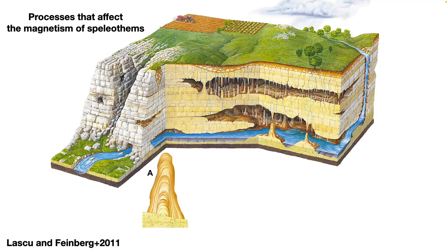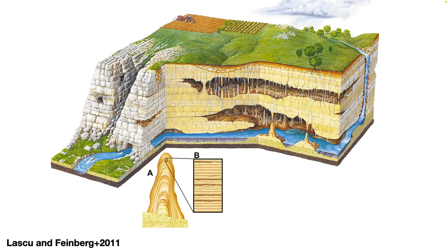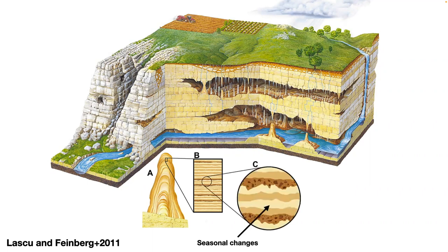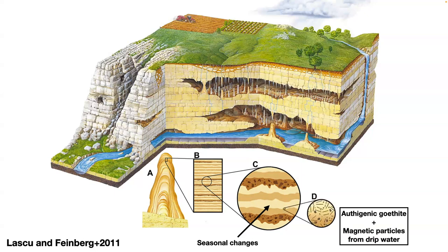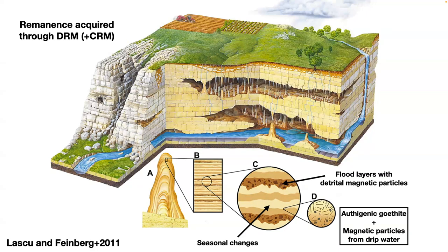If you look at a particular speleothem, you see different layers with different coloring, where the color is associated with the processes happening during deposition. You have seasonal changes, so the amount of magnetic material is intrinsically related to environmental processes occurring in the soil. In particular, you have authigenic goethite and also magnetic particles — mostly magnetite — coming from drip water. You also have flood layers, which contain large amounts of detrital magnetic particles and form the darker layers we see in speleothems. The remanence is overall acquired through a DRM, but there's also in-situ crystallization of some magnetic inclusions producing a CRM on a minor scale.